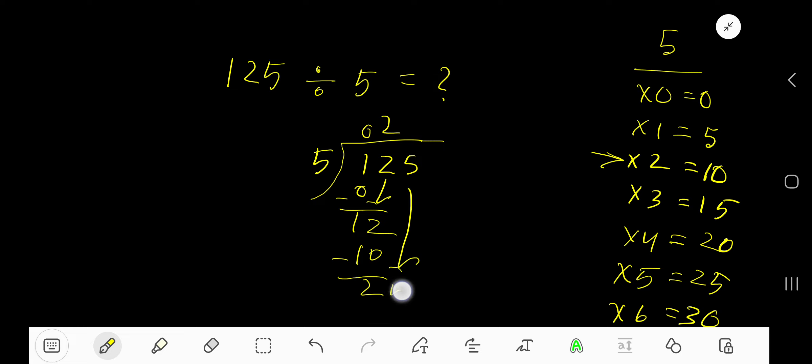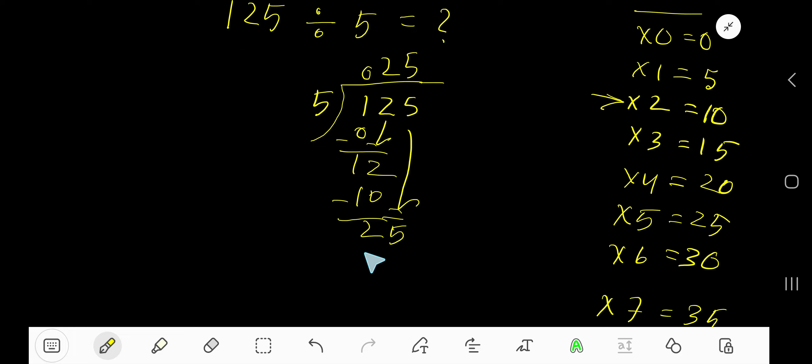Bring down this 5. 5 goes into 25 how many times? 5 times. 5 times 5 is 25, subtract 0. Our remainder is 0, so we are done. Our answer is 25.